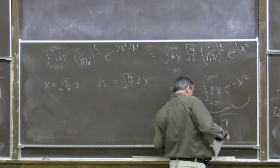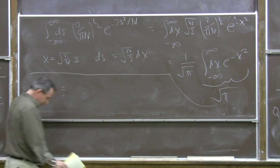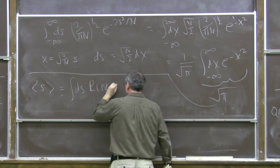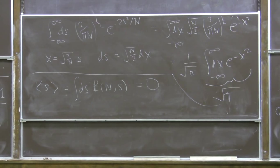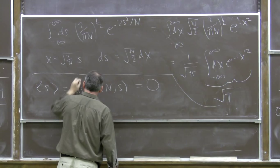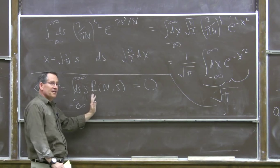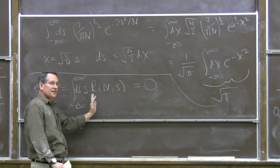Obviously if we compute the mean value of s — the integral of the probability distribution times s — we get zero, because the probability distribution is an even function. Integrating an odd function over a symmetric interval gives zero.